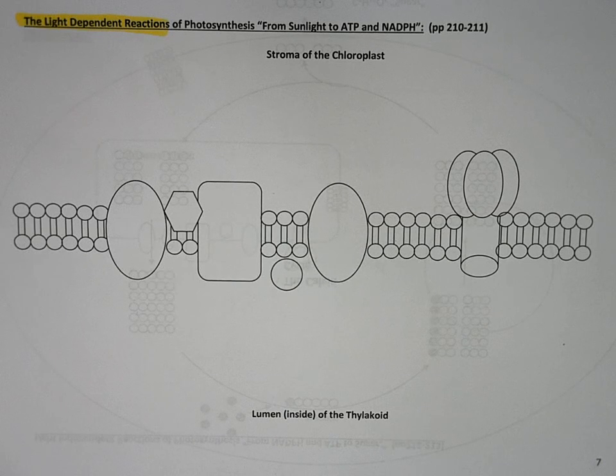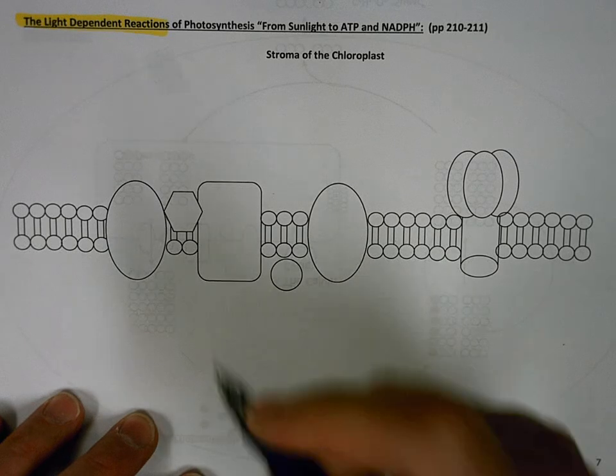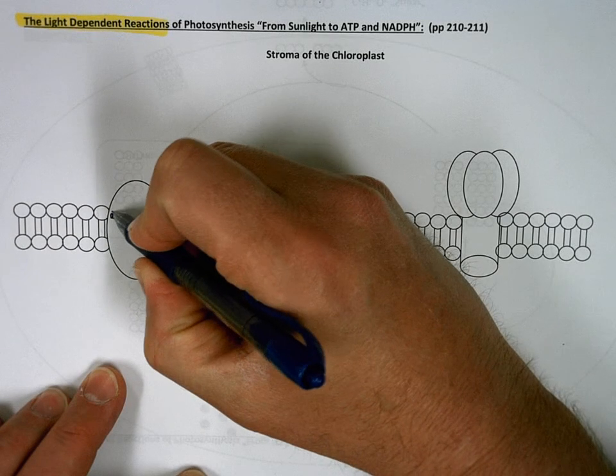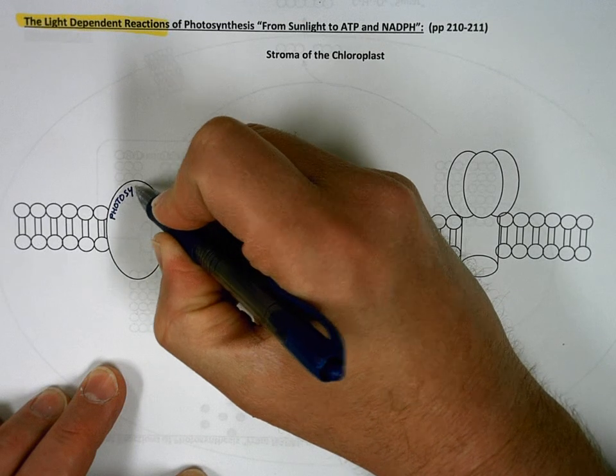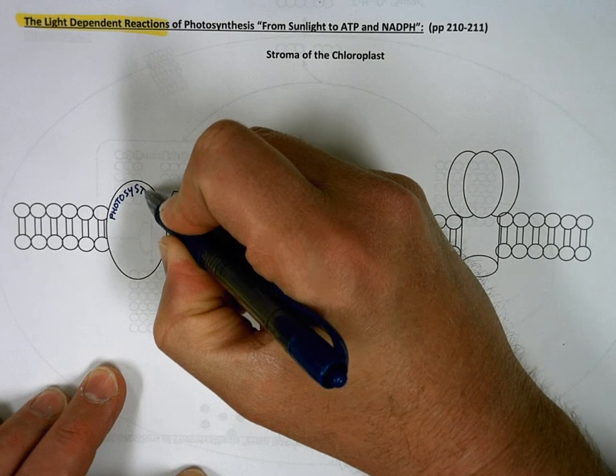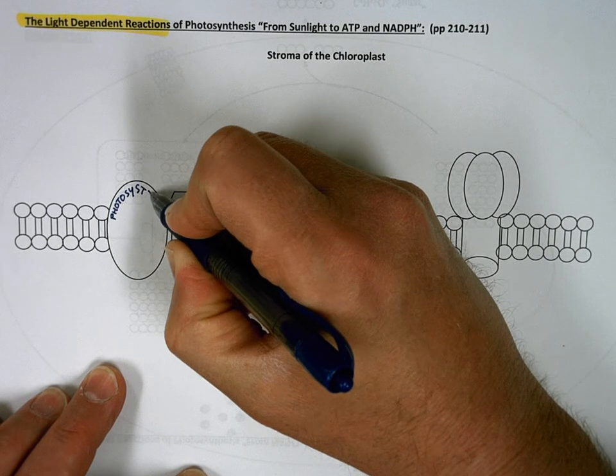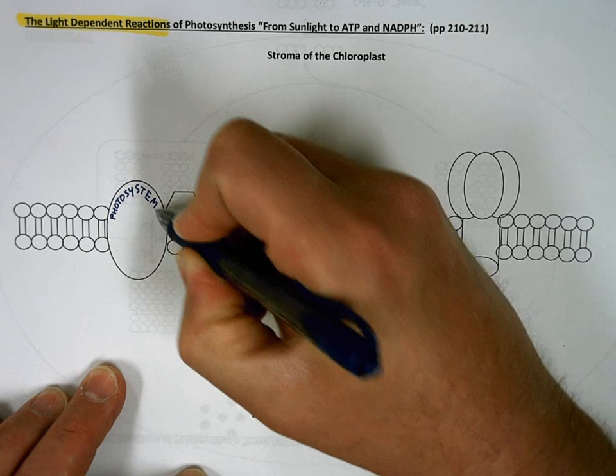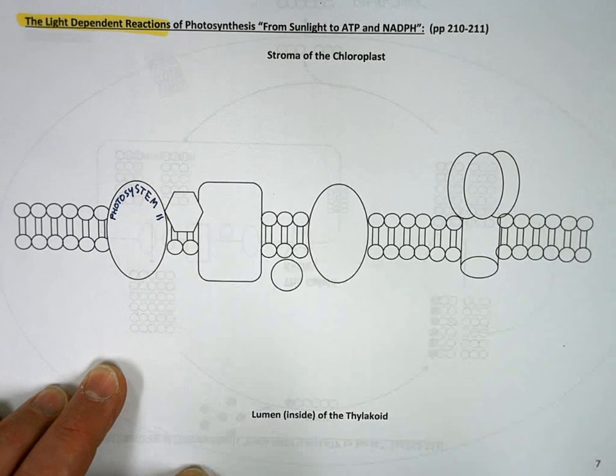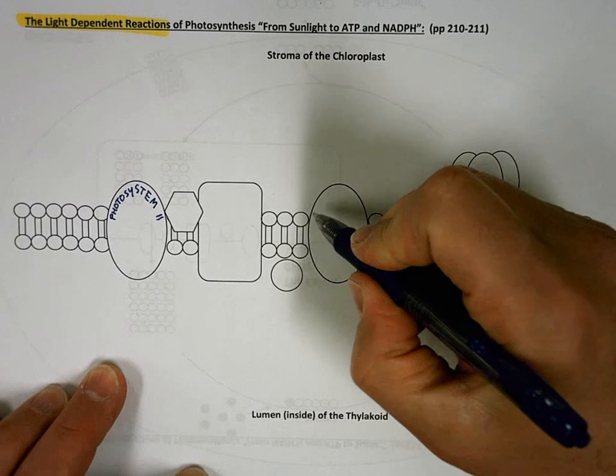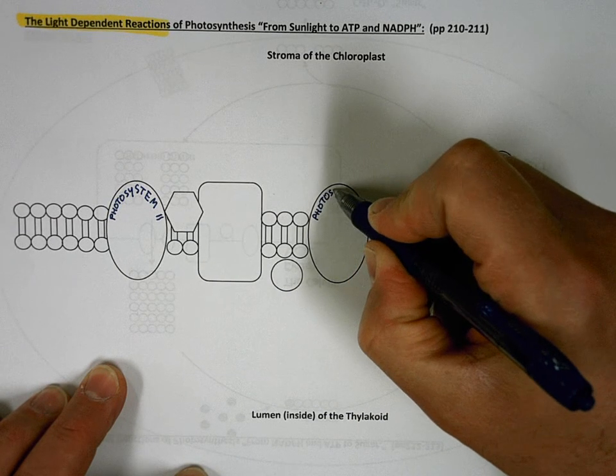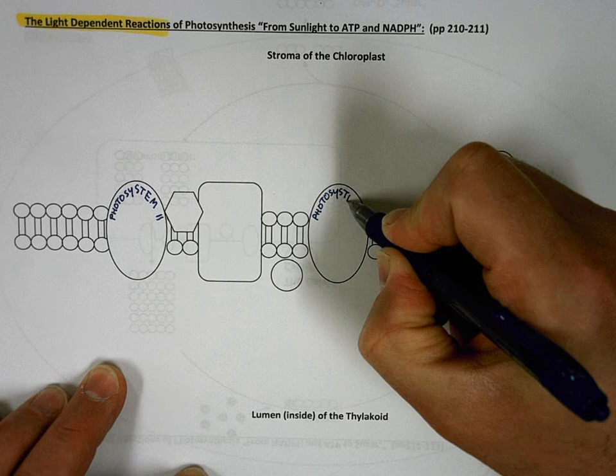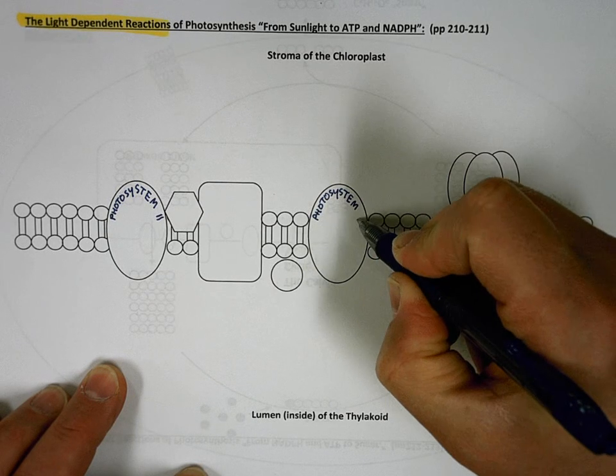We should begin by labeling some things, I guess. This is called photosystem number two. And this is called photosystem number one.